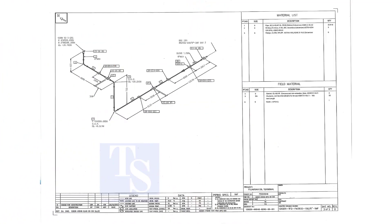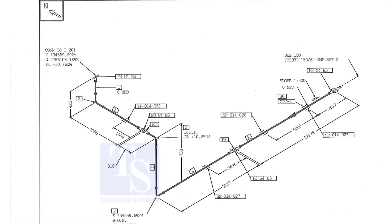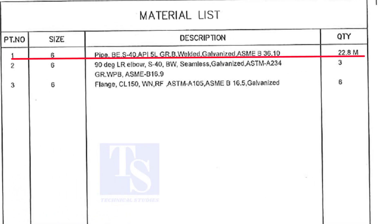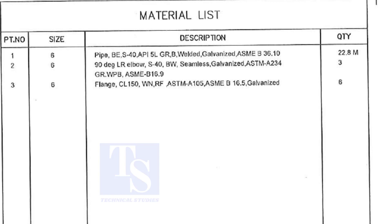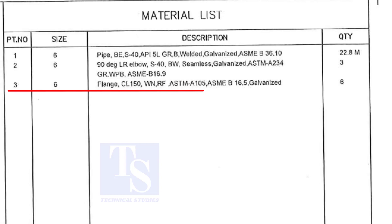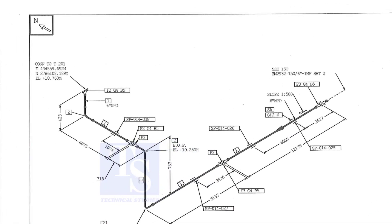This is our drawing. Let us have a quick look at the material list. Item number 1 is 6 inch pipe. BE stands for bevel end. Item number 2 is long radius elbow. Item number 3 is weld neck flange. For documents and drawings, please check the links given in the description.